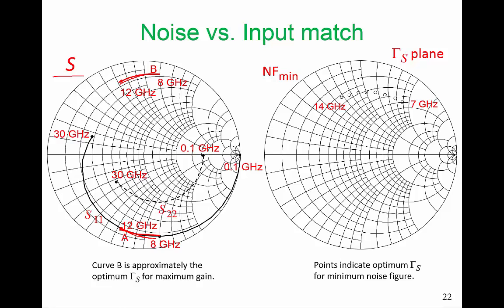Now let's look at NF-min. Here is our NF-min. It's on the gamma-S plane. Now of course this is on the gamma-S plane, but we have S22 plotted here too, so we can't call the whole chart the gamma-S plane. But NF-min is on the gamma-S plane. This point here is NF-min at 7 GHz. So if we pick gamma-S to have this value, we will have the minimum noise figure at 7 GHz. Again, when we move to the other extreme, we want gamma-S to look like this, to have the minimum noise figure at 14 GHz.